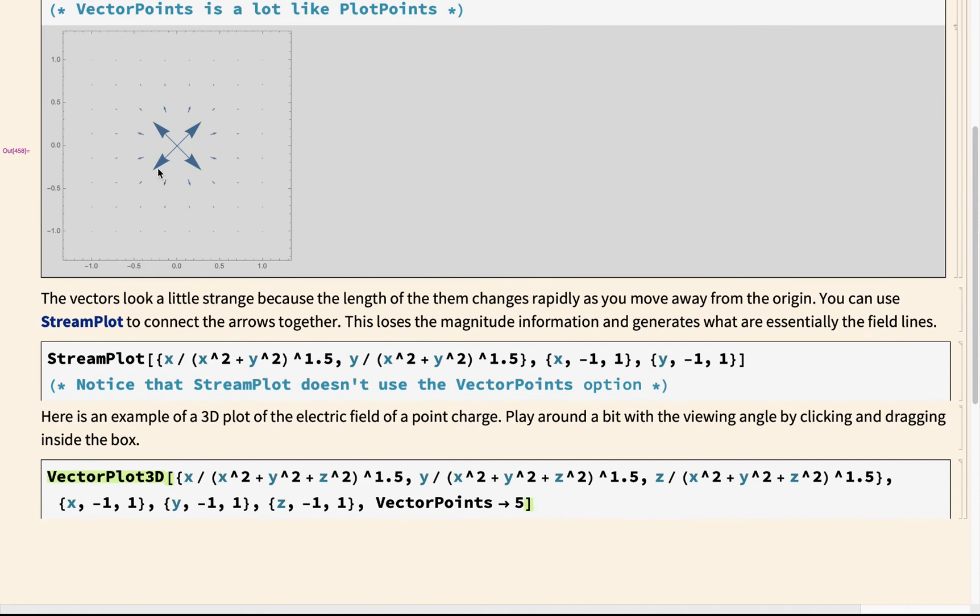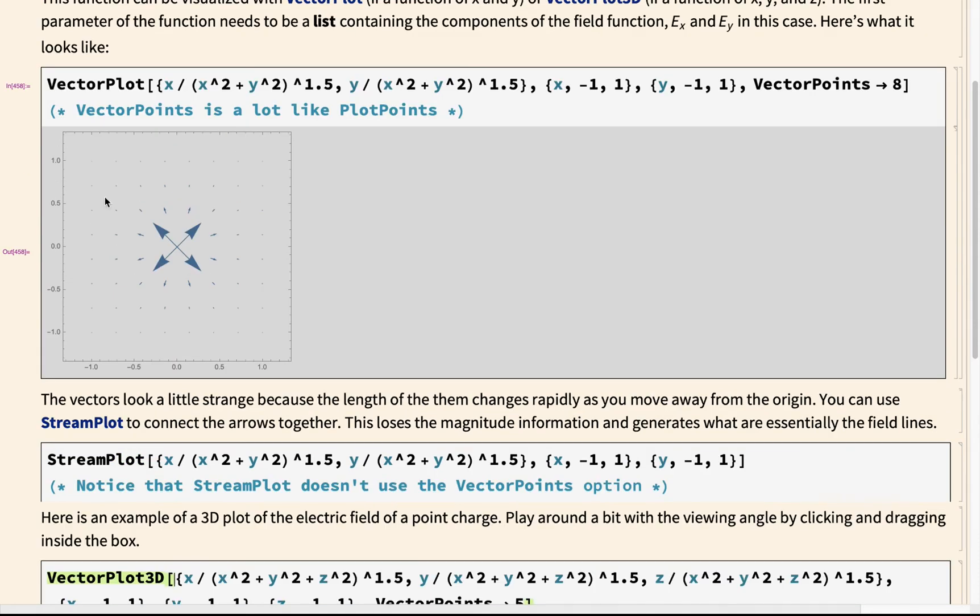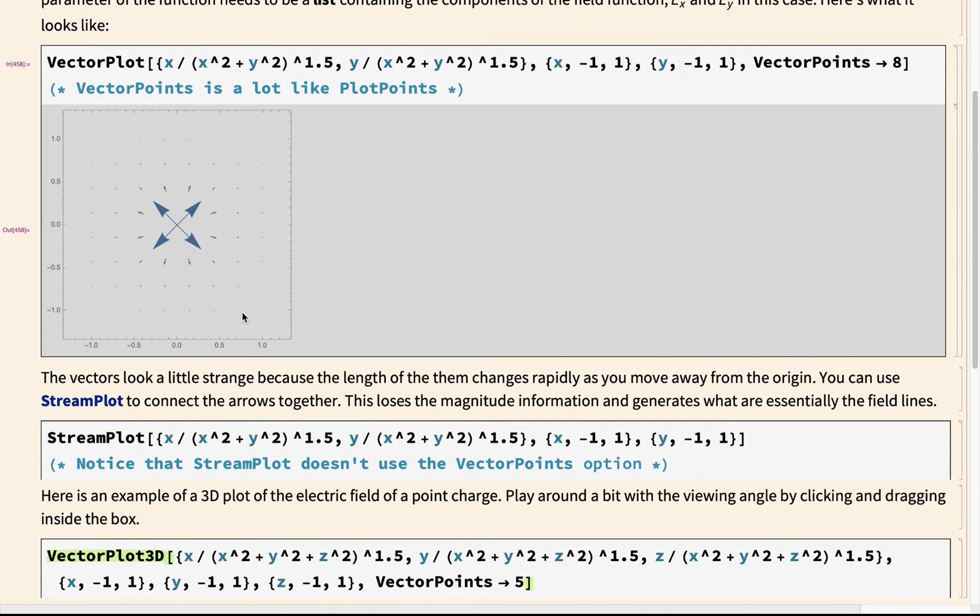For this particular example, it's kind of hard to see these vectors that are far away from the origin, because the magnitude of the electric field is so much smaller compared to what it is near the origin. So the arrows get very short, and they're hard to see.